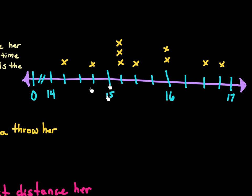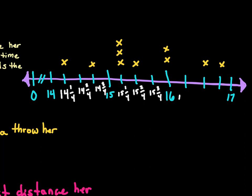Now that we know that, we can put on our mixed numbers: 14 and one-fourth, 14 and two-fourths, 14 and three-fourths. Same thing for 15: 15 and one-fourth, 15 and two-fourths, and 15 and three-fourths. Same for 16: 16 and one-fourth, 16 and two-fourths, and 16 and three-fourths. So now the number line is broken up into fourths.